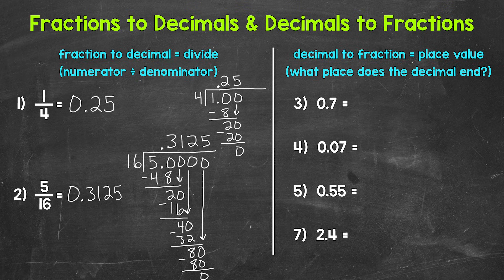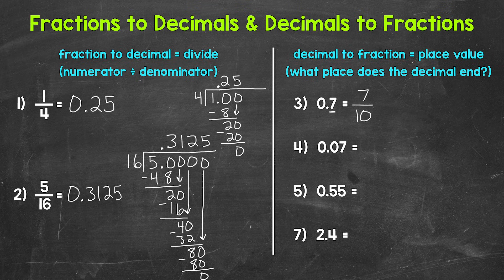Now let's move on to going from decimals to fractions. All we need to do is use place value to determine our denominator, and then simplify if possible. For example, number three: we have 0.7 — seven tenths. This decimal ends in the tenths place, so our denominator is 10. We write this as seven tenths. The only common factor between seven and ten is one, so seven tenths is already in simplest form.